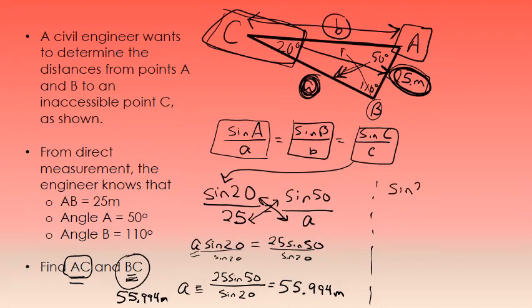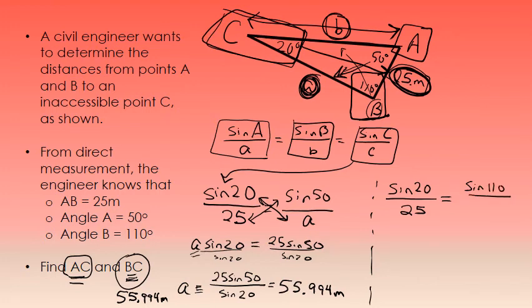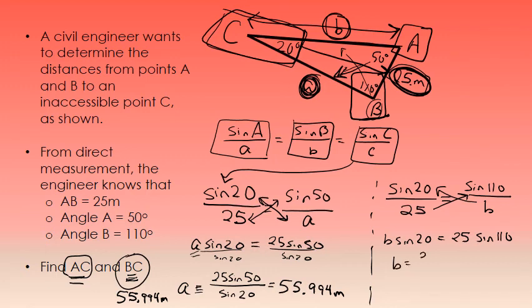I'll relate the sine of angle C — which is 20 — over the length of side C, which is 25, equal to the sine of angle B, which is 110 degrees, over the length of side B, which is my unknown. Cross multiplication gives B times the sine of 20 equals 25 times the sine of 110. Dividing both sides by the sine of 20 gives B equals 25 sine 110 over the sine of 20, which to three decimal places is 68.687 meters.